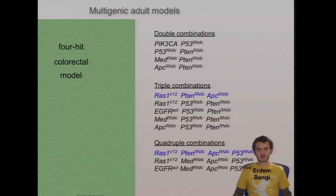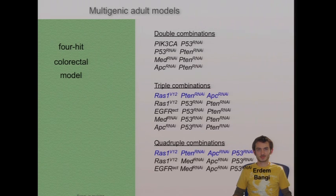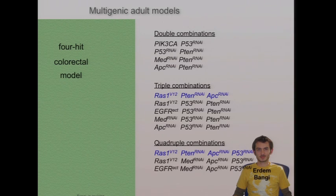Now let me talk about the flip side — the importance of embracing complexity in models, which I believe is exactly what ModENCODE is about. I mentioned at the beginning colorectal cancer. We've been modeling breast, lung, and colorectal, as well as thyroid cancers. This work is by a terrific postdoc in the lab, Erdem Bangi. He went into the human sequencing data and asked: what are the most common triple, quadruple, quintuple combinations of oncogenes and tumor suppressors that you see in currently sequenced patients?